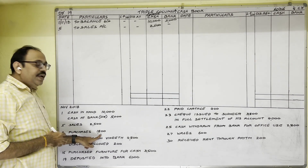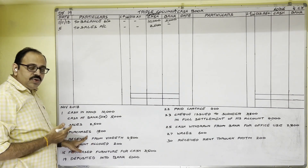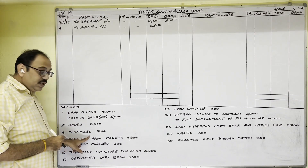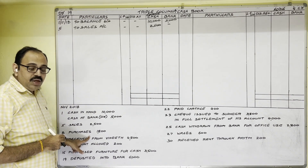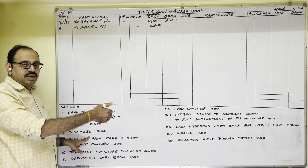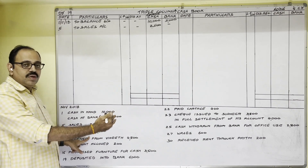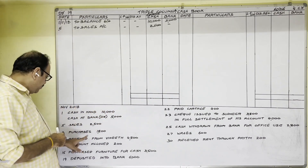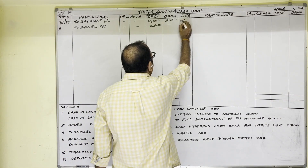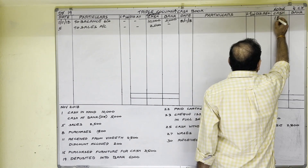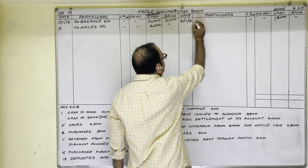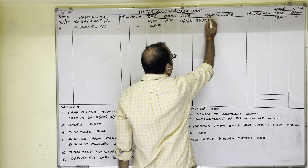8th November: Purchases 1,800. No information is given about what was purchased, meaning we purchased goods. No supplier name is given, meaning we purchased for cash. So cash is going out — credit side cash column. Write 8th November, 1,800 rupees in the cash column. When goods are sold we write 'Sales'; when goods are purchased on the credit side we write 'By Purchases account'.